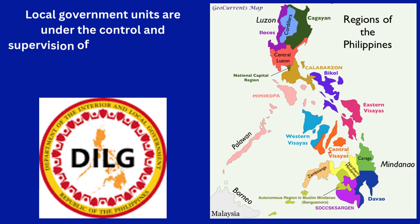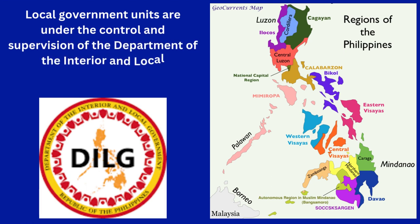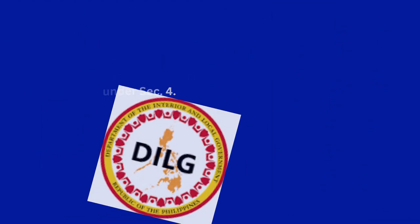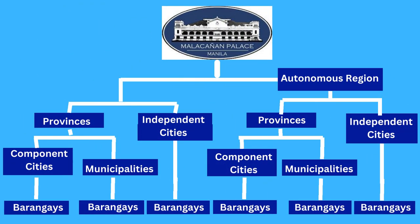Local Government Units are under the control and supervision of the Department of the Interior and Local Government, as provided by the Constitution under Section 4. Take a look at the Organizational Chart for the Flow of Supervision by the Executive Branch through the DILG.